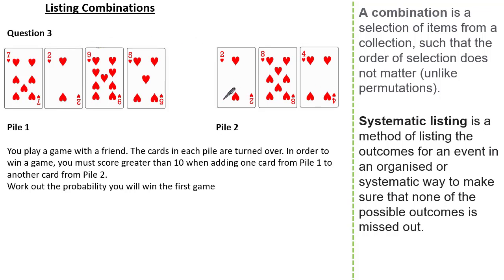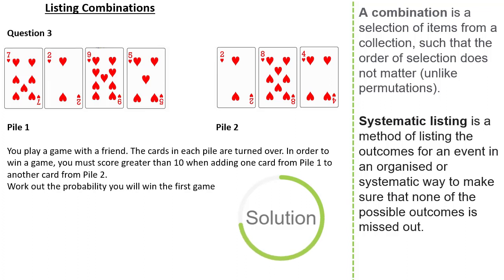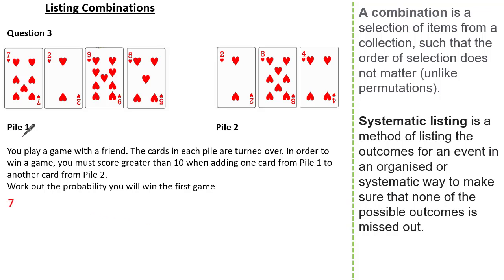Now let's have a look at our last question. Here we have two piles of cards. We play a game with a friend — the cards in each pile are turned over. To win the game we must score greater than 10 when adding one card from pile 1 and one card from pile 2. We must work out the probability that we will win the first game. Let's adopt a systematic approach starting with our number 7: we could pick 7 and 2 (total 9), 7 and 8, or 7 and 4.